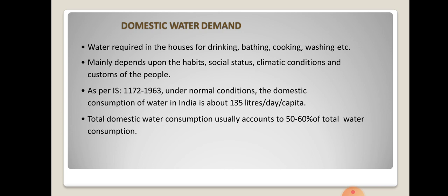Domestic water demand depends on social status and climatic conditions. For example, in summer the consumption will be more because people bathe more frequently, whereas in cold seasons consumption is comparatively less. Social status also matters — when the standard of living is higher, water consumption is more, for example due to use of bathing tubs, air conditioners, and other such uses. Habits and customs of the people also affect domestic water demand.